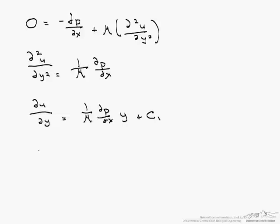Now we integrate it again and we get that u equals 1 over 2 mu dp/dx y squared plus c1 y plus c2. And what we need to do here is solve for c1 and c2 by using boundary conditions.